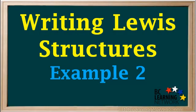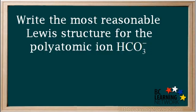In this example, we'll learn how to write the most reasonable Lewis structure for a given polyatomic ion. The question asked is to write the most reasonable Lewis structure for the hydrogen carbonate or bicarbonate ion, HCO3-.